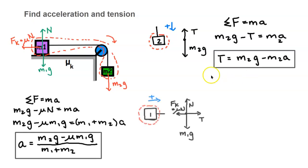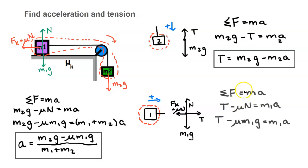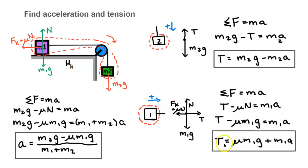We can also solve for tension using mass 1. We draw a system boundary, draw the positive direction, then draw the force diagram. This is a little different because m1 is on a table: m1g down, normal force up, friction to the left, tension to the right. Applying Newton's second law: tension in the positive direction minus friction in the negative direction equals m1a. Substituting n equals m1g and solving for T, we get T equals mu·m1g plus m1a.